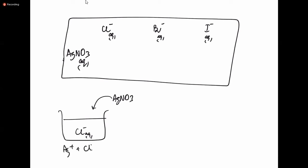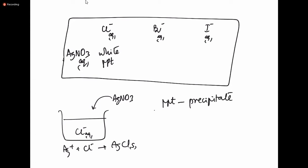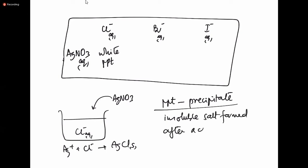Ag+ ions from silver nitrate react with chloride ions and form AgCl — a white solid precipitate. If you have a white precipitate form, it means chloride is confirmed. A precipitate is an insoluble salt formed after a chemical reaction.